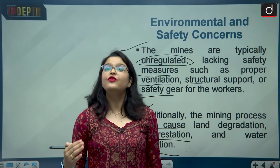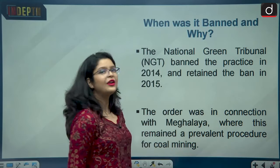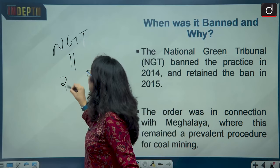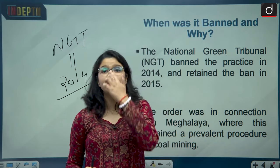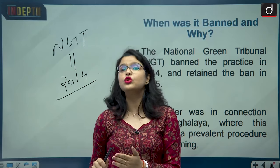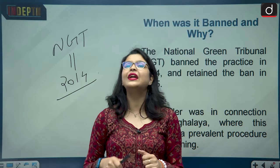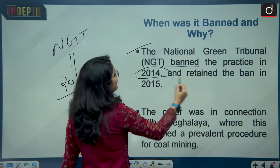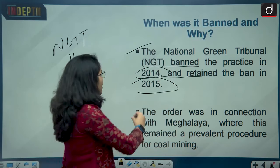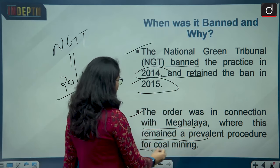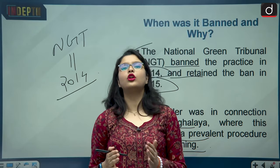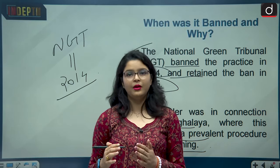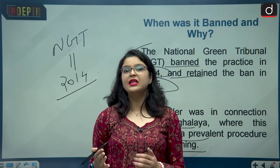Rat hole mining was banned by the National Green Tribunal (NGT) in 2014. The NGT, after taking into account various media reports and NGO committee reports, declared it a very unscientific and unhealthy procedure. The ban was retained in 2015. The order pertains to Meghalaya, where this was a prevalent coal mining procedure. The state government has appealed this NGT order in the Supreme Court, and though the practice is currently under appeal, it continues due to its economic sustainability for the local population.